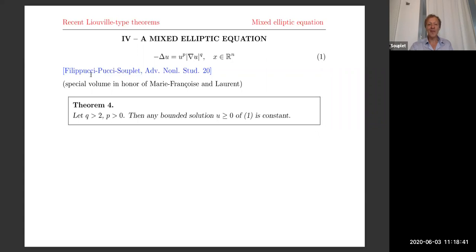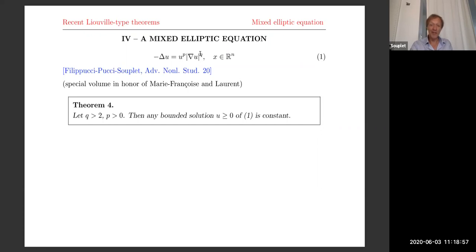This is our theorem from another paper with Roberta and Patrizia, which appeared in the special volume dedicated to Marie-Françoise and Laurent. It says: when Q is bigger than two and P is any positive P, if you consider non-negative bounded classical solutions of this equation, they have to be necessarily constant. So there are no non-constant bounded solutions.